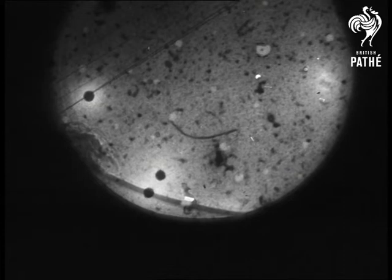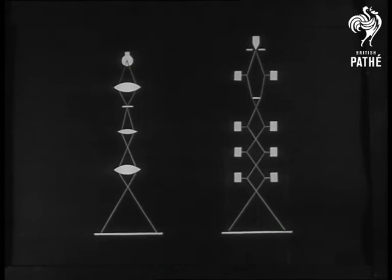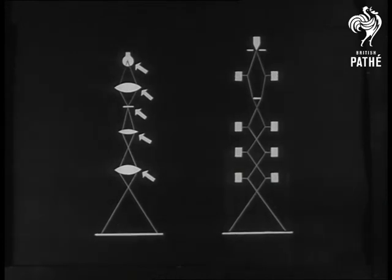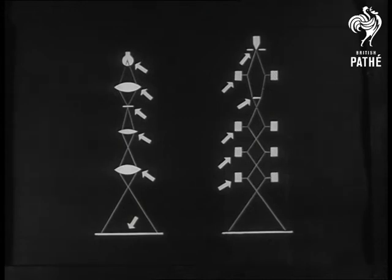The optical microscope uses a lamp, condenser lens, specimen, objective lens, eyepiece, and photographic screen. The electronic microscope has an electron gun, a magnetic coil which replaces the condenser lens, the specimen, the objective lens, projector lens, and a fluorescent screen.